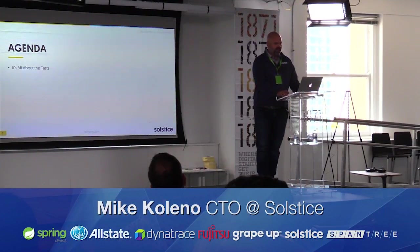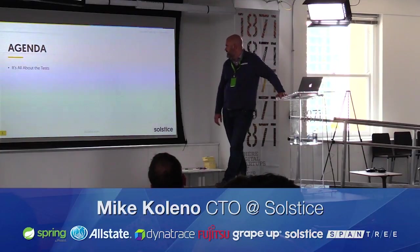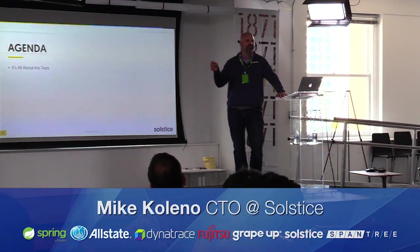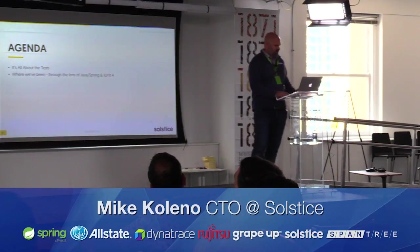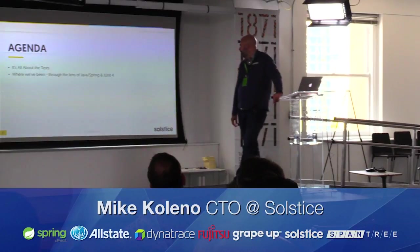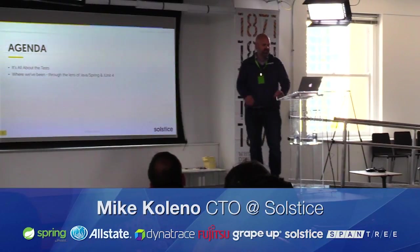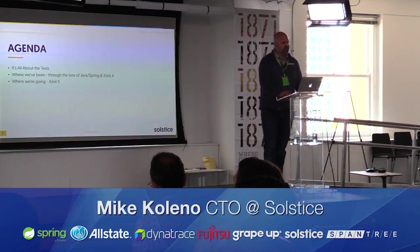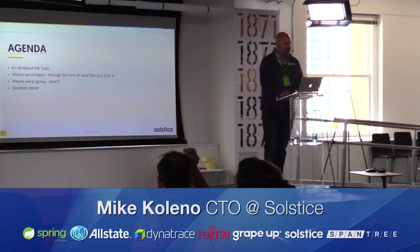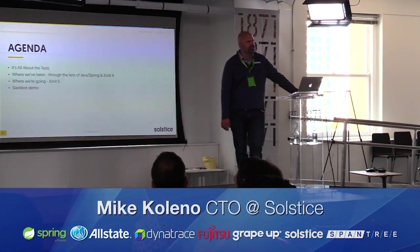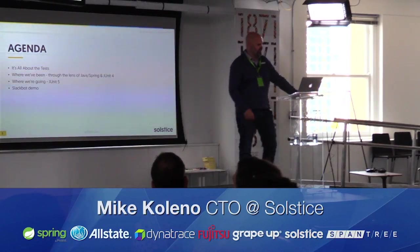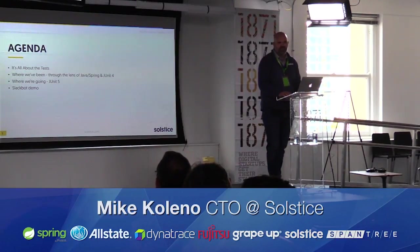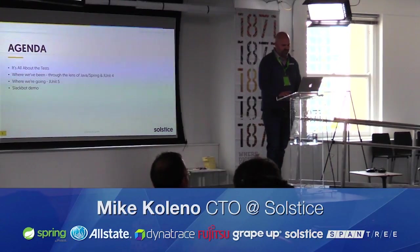Just real quick, I want to run through the agenda today. This is a talk about testing, and we're going to talk about the significance of what tests have become. We'll take a look back through the lens of Java Spring and JUnit 4, but more importantly, we're going to look at where we're going with JUnit 5. And it wouldn't be a Solstice talk without a digital experience demo — we'll look at building bots for Slack, and then tie that back to some tests we wrote with JUnit 5.